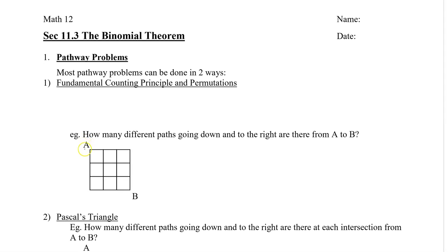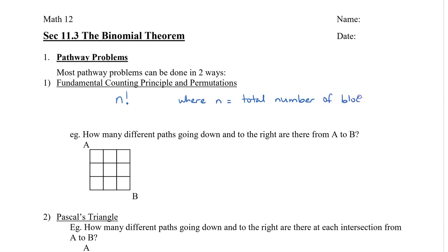So for example, let's say that I am at A and I want to get to B. How many paths going down and to the right are there from A to B? We count the number of blocks going down and the number of blocks going to the right — city blocks, as if these line segments were roads. We take N factorial, where N is the total number of blocks, and divide it by A factorial and B factorial, where A and B are the number of blocks in each direction.